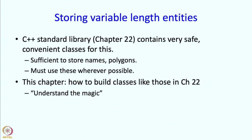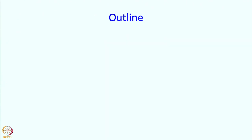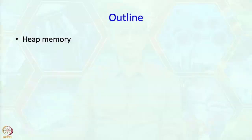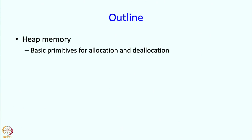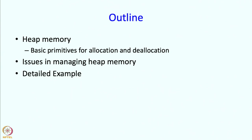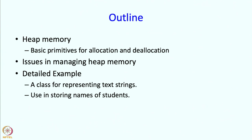We are going to understand what is the magic on which these classes run. Here is the outline for today's lecture. I am going to talk about something called heap memory, which is something you have not seen so far. There will be a discussion of the primitives for allocation and deallocation of memory from this heap memory, then how to manage it, and a detailed example — a class for representing text strings, which will be useful in storing the names of students.